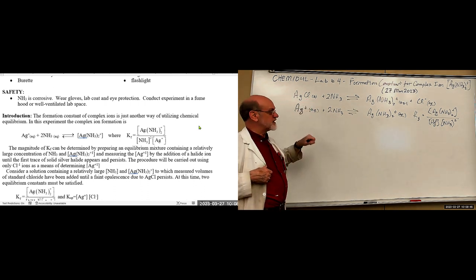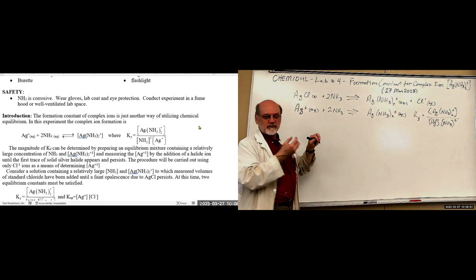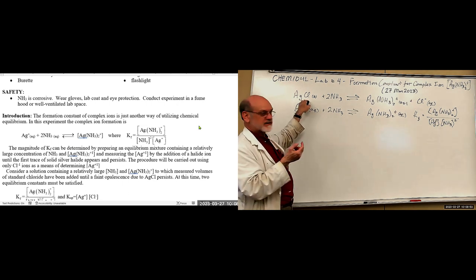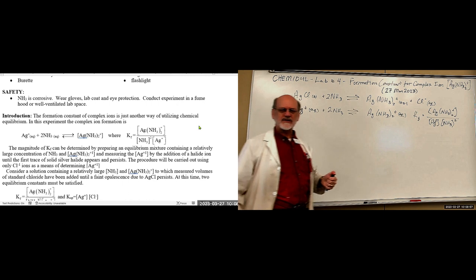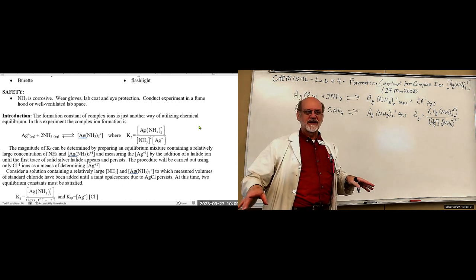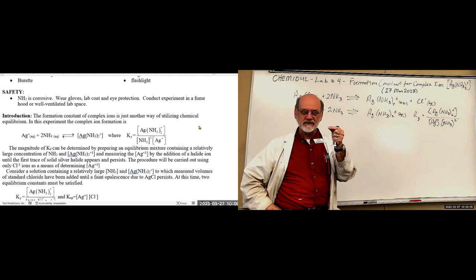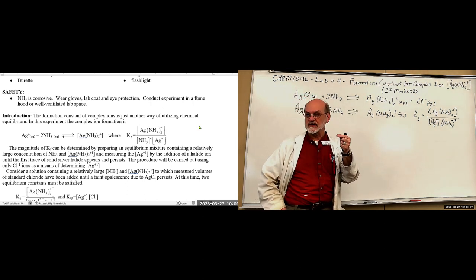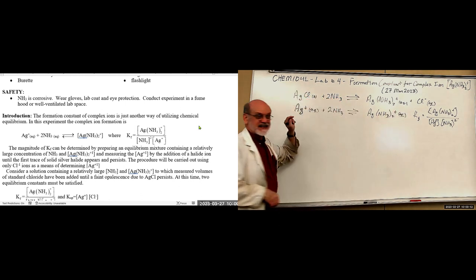What you'll notice is, as you add this to the solution, where the drop hits it, it'll form the white precipitate of this, and then as it mixes, it'll go away. Kind of like when we were doing acid-base titration, and you had the pink color show up, and then it disappeared. And then, we were looking for it when it turned pink and stayed pink. Just that very last drop did that. Now, we want the very last drop that forms this and stays.